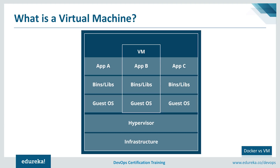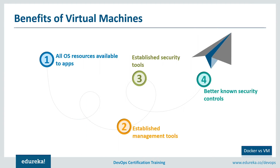Each virtual machine requires its own underlying operating system, and the hardware is virtualized. A hypervisor, or virtual machine monitor, is software, firmware, or hardware that creates and runs virtual machines. It sits between the hardware and the virtual machine and is necessary to virtualize the server. Since the advent of affordable virtualization technology, IT departments have embraced virtual machines as a way to lower costs and increase efficiencies.